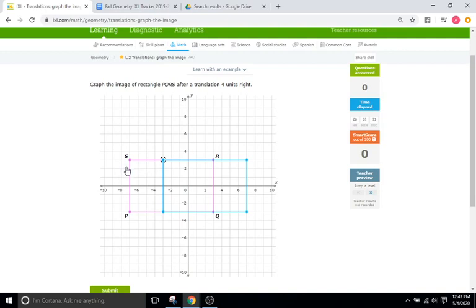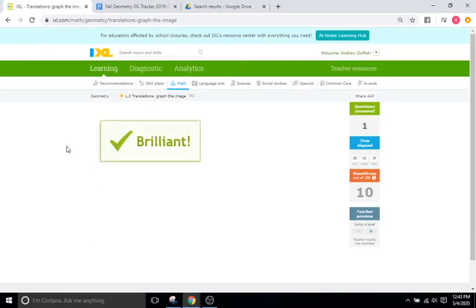And there you go. We just slid our initial pre-image, our rectangle, over four units to the right. Good.